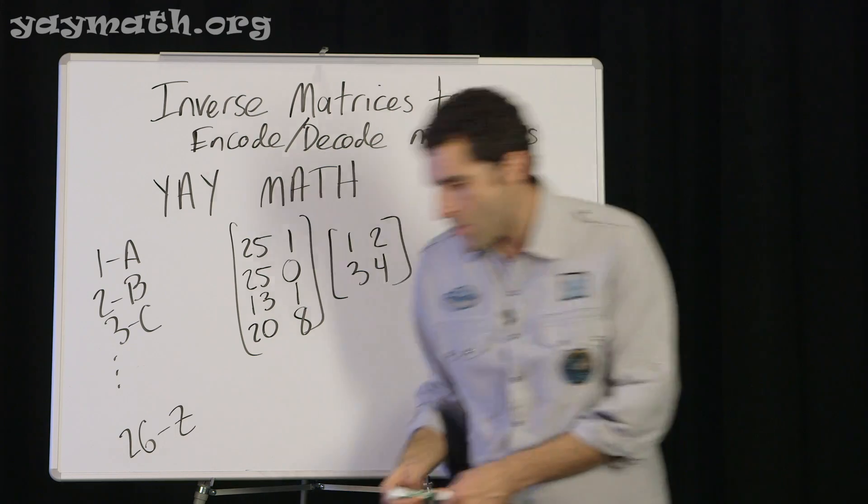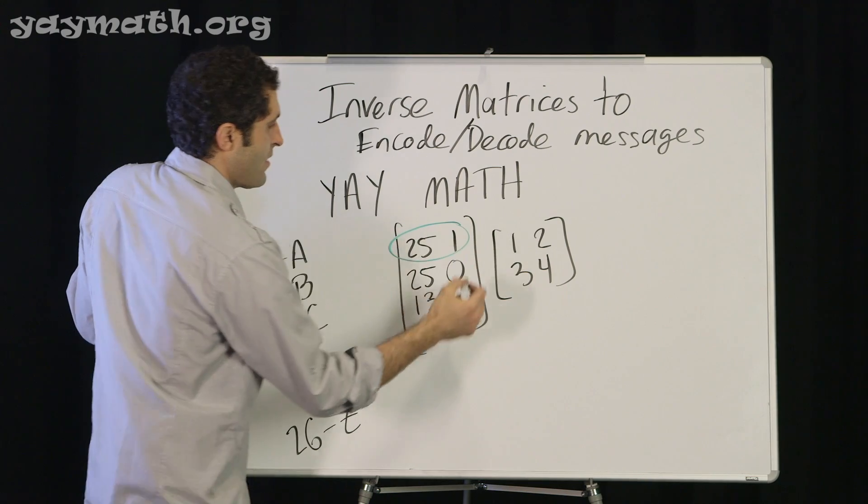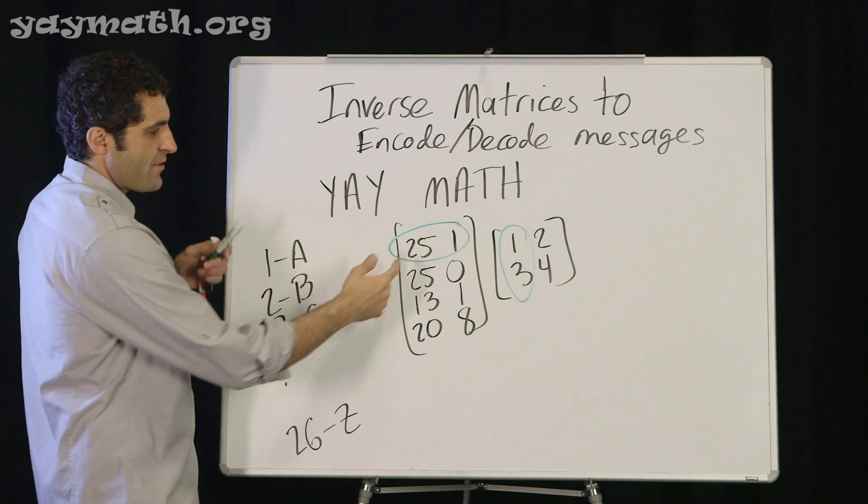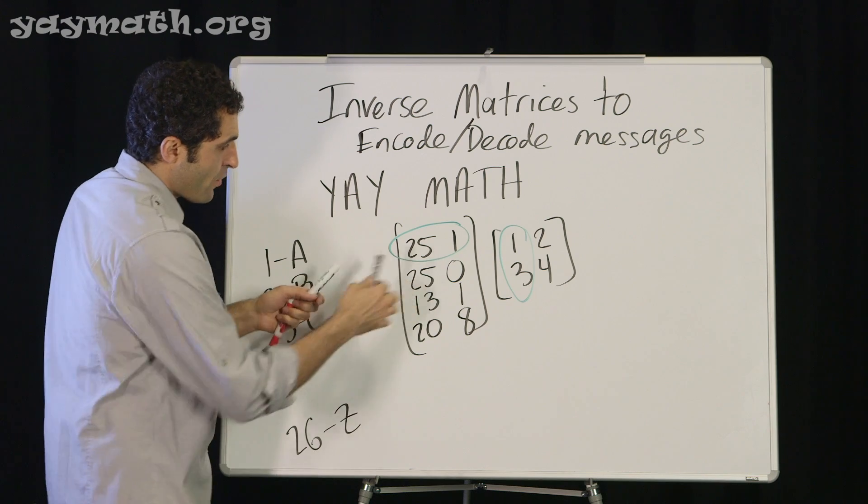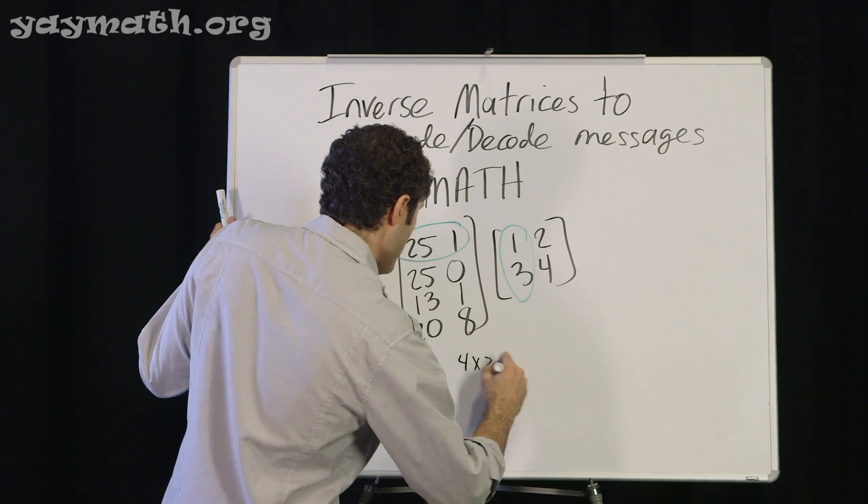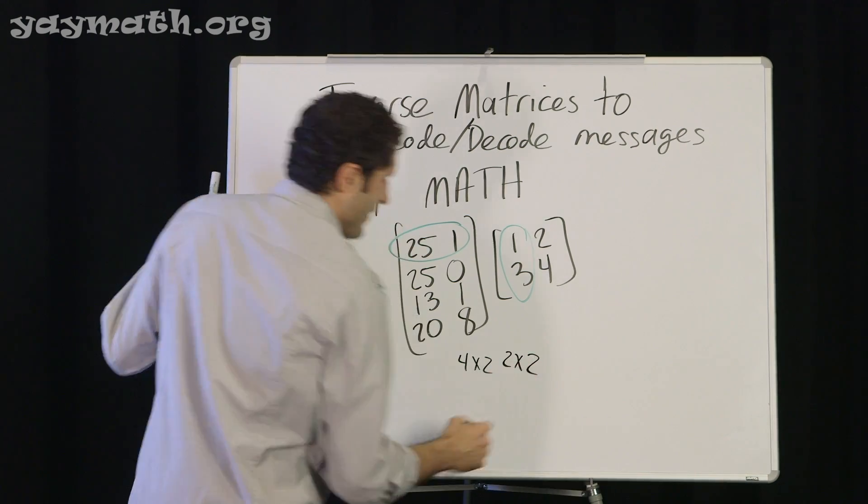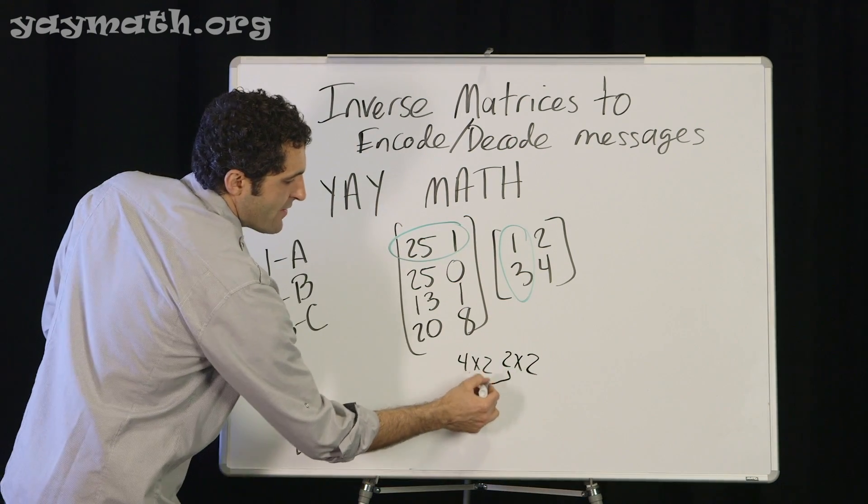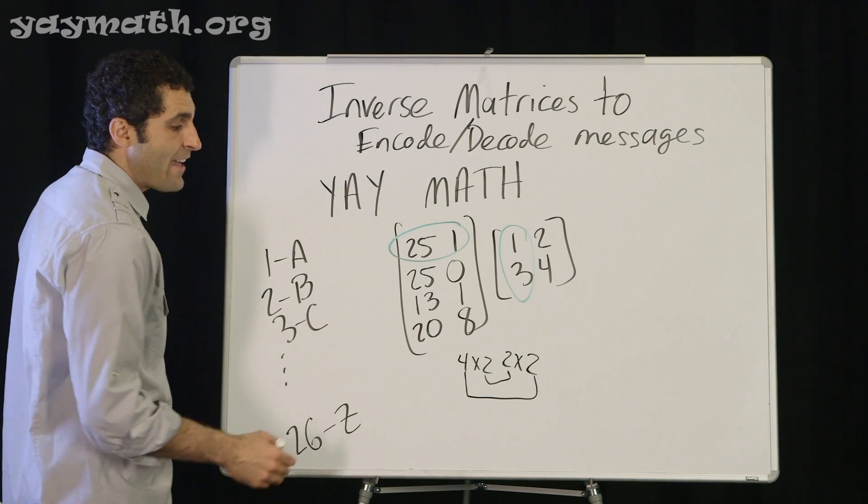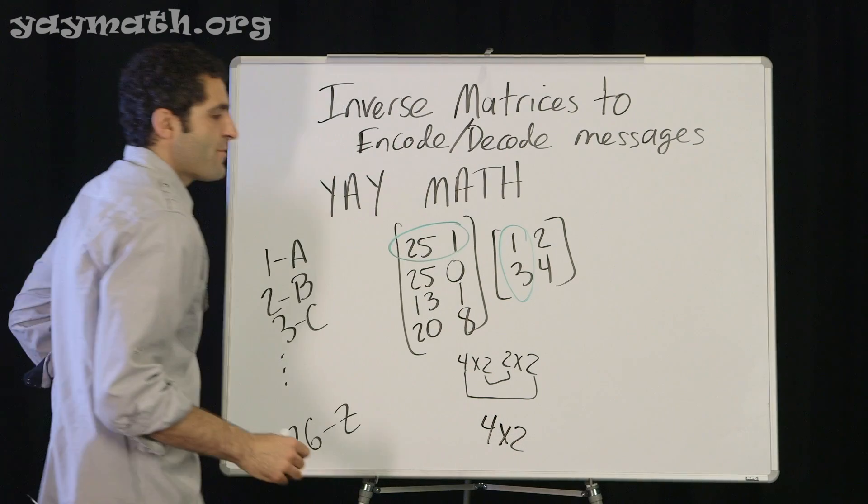So we need to multiply these two. Let's do it. Rows by columns. Let's see if it works first. Rows by columns. This is four rows by two columns, so that's 4 by 2. This is a 2 by 2. If these two numbers match, then they can multiply. And the result is these two, so the result will be another 4 by 2 matrix. Let's go ahead and do that.